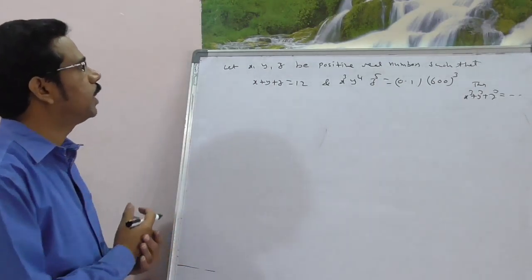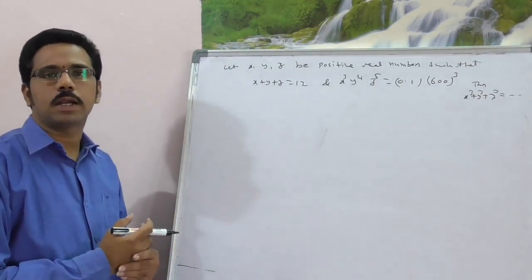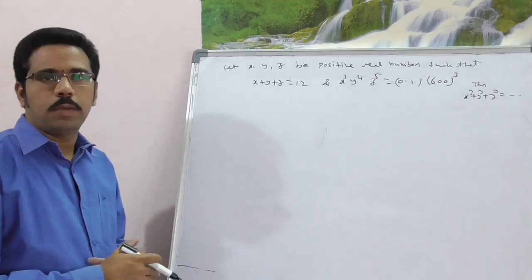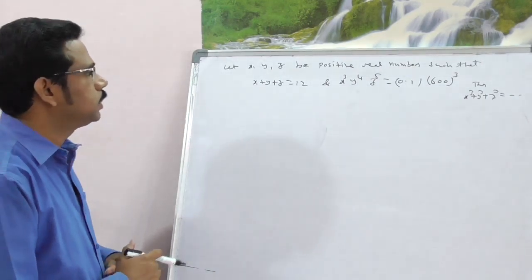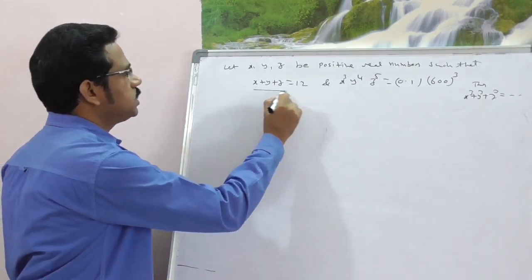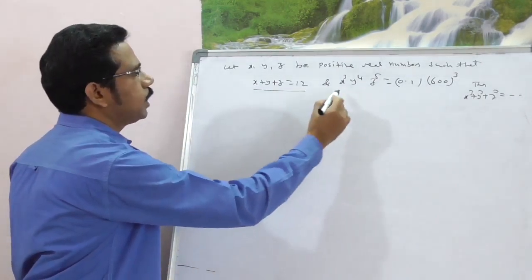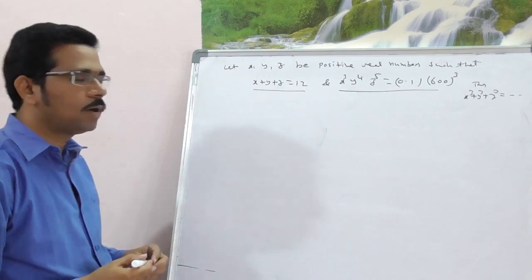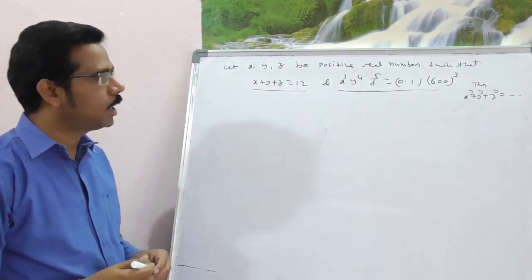Hi, this question from J.E. Main online exam which was conducted on April 9th, 2016. Just observe here: x plus y plus z is equal to 1, and x³y⁴z⁵ is equal to 0.1 of 600 whole cube.